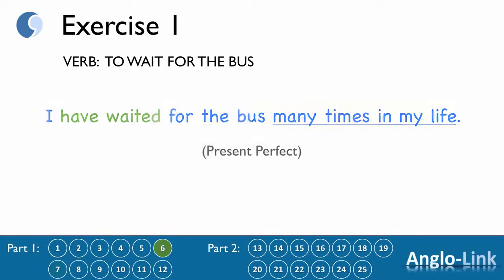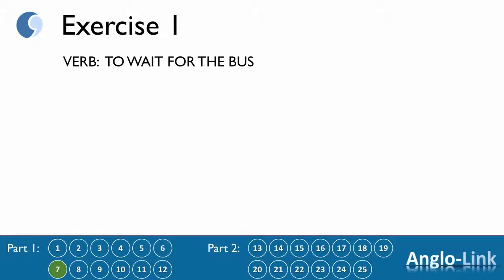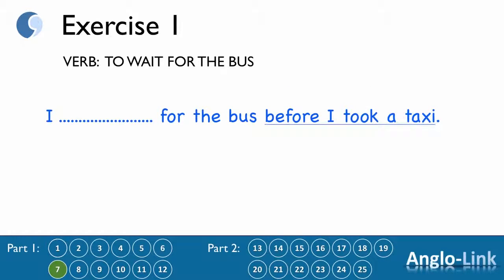Number 7: 'I ___ for the bus before I took a taxi.' Answer: 'I had waited for the bus before I took a taxi.' Past perfect.